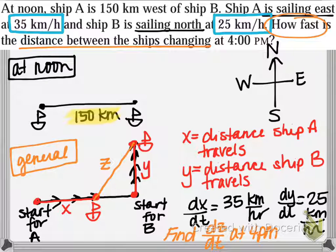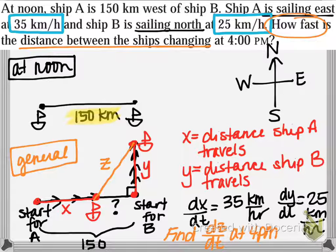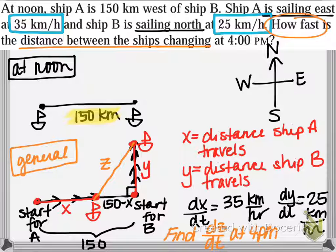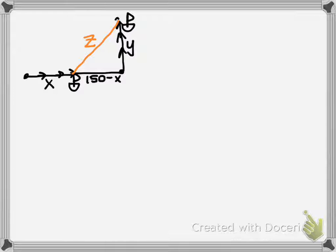Next I need to find an equation that relates our variables. We have three variables, and there is a right triangle here, though the base isn't labeled yet. The original distance between the ships before they began moving was 150 kilometers, so the horizontal distance is 150. Since ship A has traveled a distance of x, the base of the triangle is 150 minus x. Using the Pythagorean theorem: (150 − x)² + y² = z².